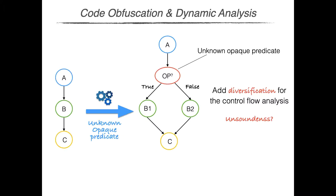Going back to our example, in order to add false negatives, we could use an unknown opaque predicate — a predicate that sometimes evaluates true and sometimes evaluates false. When we insert an unknown opaque predicate, the code in the true and false branches should be different but semantically equivalent. So blocks B1 and B2 are different but both equivalent to block B. This adds false negatives since the dynamic analysis would have to consider more execution traces to cover all the program code — for example, to verify the absence of bugs or to reconstruct the program control-flow graph. While the control-flow graph of the original program could be derived by observing one execution trace, this second program needs at least two traces.